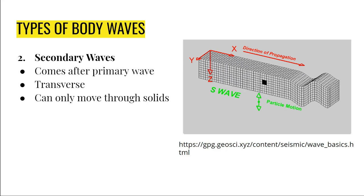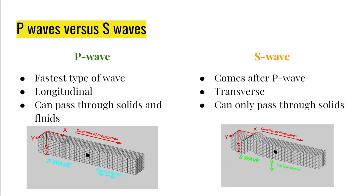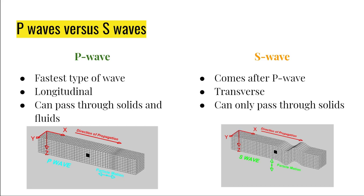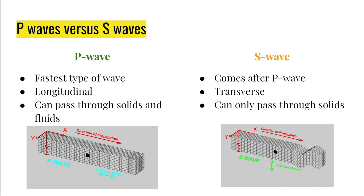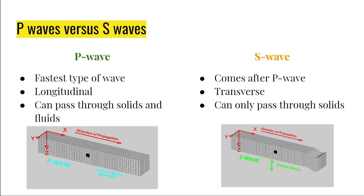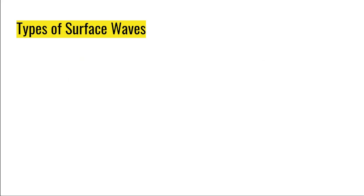In the next slide, P waves and S waves are placed side by side so you can compare the movement of the two. Body waves are waves that can travel into the interior of the Earth. Now let's move on to surface waves. Surface waves are those waves that do not travel in the interior of the Earth — they travel only on the surface, which is why they are called surface waves.